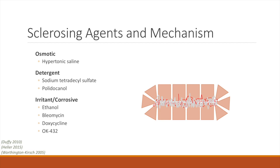However, ethanol has a high rate of complications including blistering and ulceration, as well as more major complications such as pulmonary embolism. Skin ulceration is the most common complication, occurring in 21 percent of cases. Bleomycin is an anti-neoplastic agent found to be an effective sclerosing agent with response rates from 80 to 100 percent for venous and lymphatic malformations, and has lower systemic toxicity, although cases of pulmonary fibrosis have been reported.